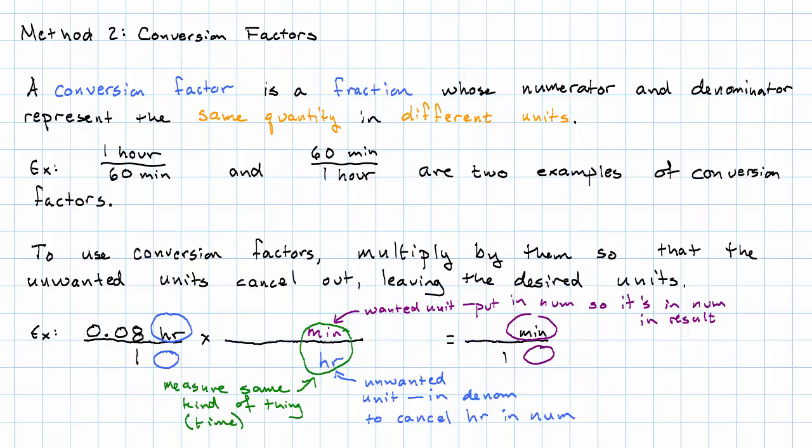Whenever we have a conversion factor, the numerator and the denominator are going to measure the same quantity. And now we think about facts we know about the world. We know that 60 minutes and one hour represent the same amount of time. We see that hours in the numerator and hours in the denominator really do cancel out. And then we multiply the numerators and get 4.8. We multiply the denominators and get 1 times 1 equals 1. We get 4.8 minutes over 1.